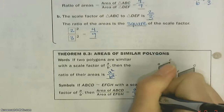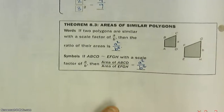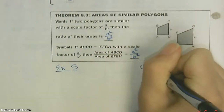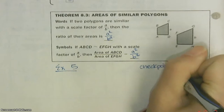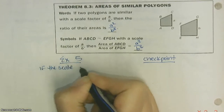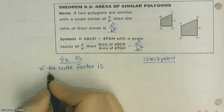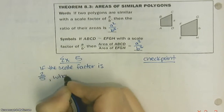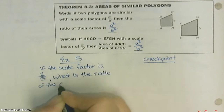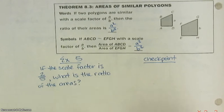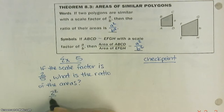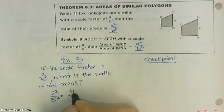Kind of makes sense because that's what goes with the units. Let's do one more example — example five, and then you're going to do a checkpoint. If the scale factor is two to five, what is the ratio of the areas? What we just learned: take your scale factor and square it. So two squared over five squared — that makes four over twenty-five.